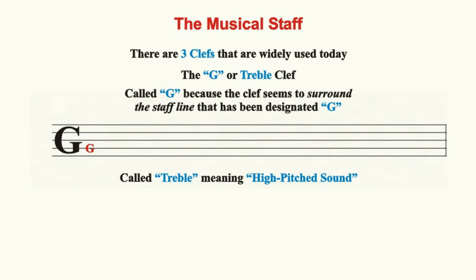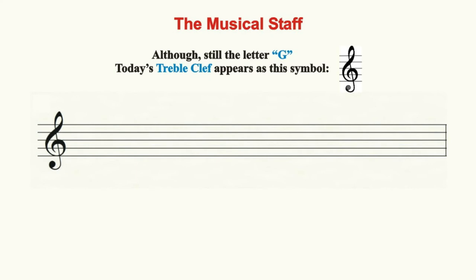There are three clefs that are commonly used today. The first clef we'll look at is called the G or treble clef. It's called the G clef because the symbol itself is a form of the letter G and seems to surround and indicate the staff line named G. It's called the treble clef because treble means high-pitched, telling us that the range of tones on this staff are within the higher-sounding range. In reality, the clef symbol used today is a highly ornate form of the letter G.